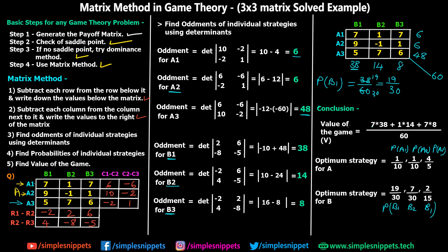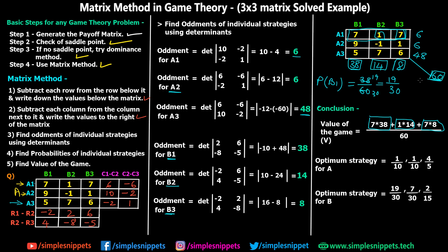The value of the game can be found in four different ways. Taking the first row values [7, 1, 7] and multiplying by the column oddments [38, 14, 8]: (7×38) + (1×14) + (7×8) = 266 + 14 + 56 = 336, divided by 60. You can also use the second or third row, or any column multiplied by the row oddments — all give the same result. The value of the game is 336/60.